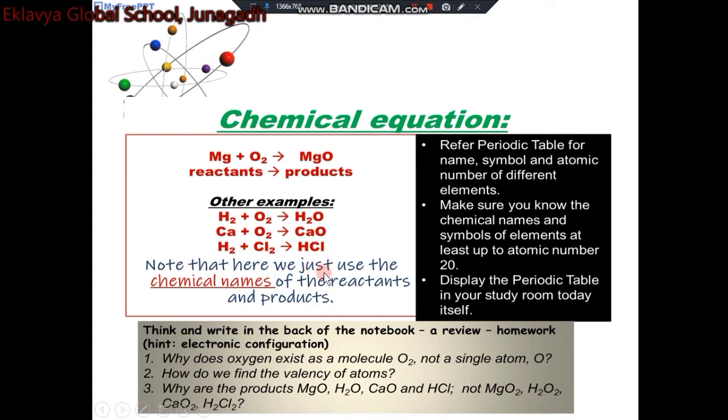Note that here we just use chemical names of the reactants and products. And one important thing: refer to the periodic table for name, symbol and atomic number of different elements. Make sure you know the chemical names and symbols of elements at least up to atomic number 20. Display the periodic table in your study room today itself for better learning.